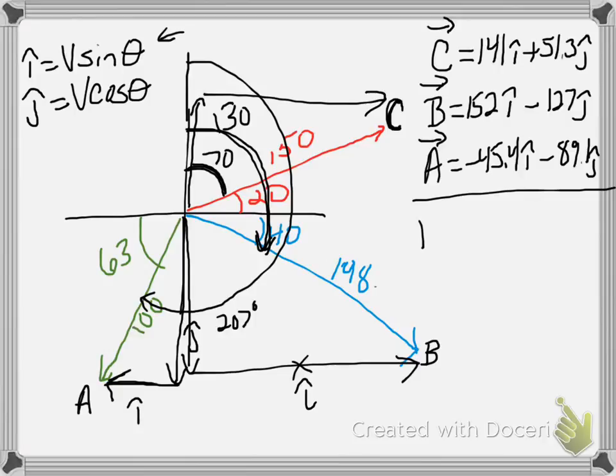So if I want the resultant vector, all I have to do is literally add them up. So I'm going to take 141 plus 152 minus 45.4 to get my resultant vector i-hat, and it's going to be 248 i-hat. I'll take 51.3 minus 127 minus 89.1, and I'll get a minus 165 j-hat. So there's your resultant vector written in component form.